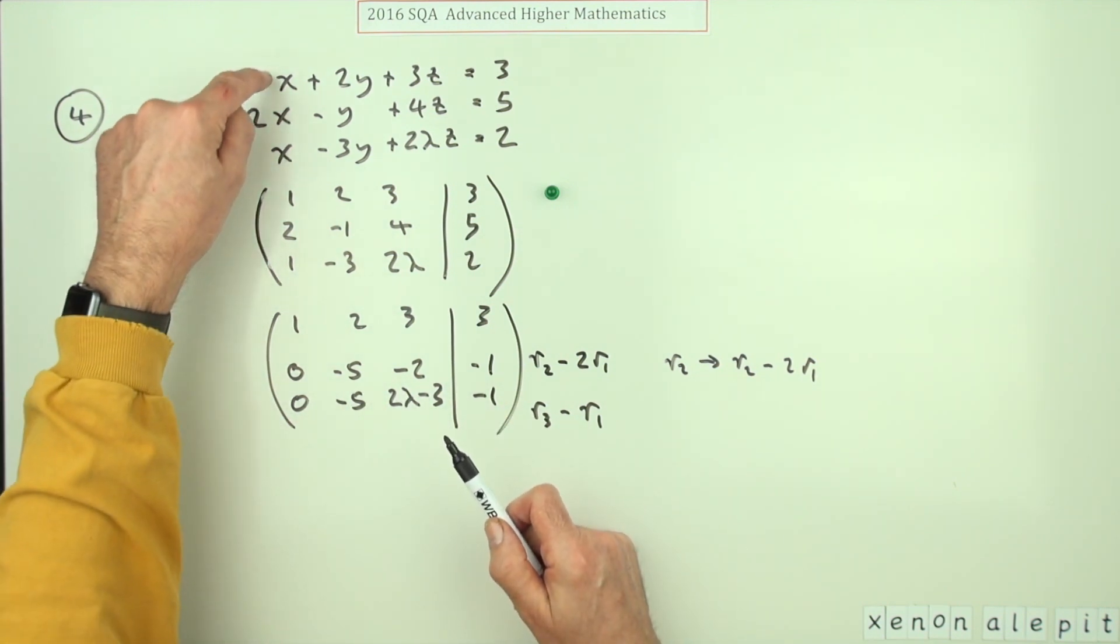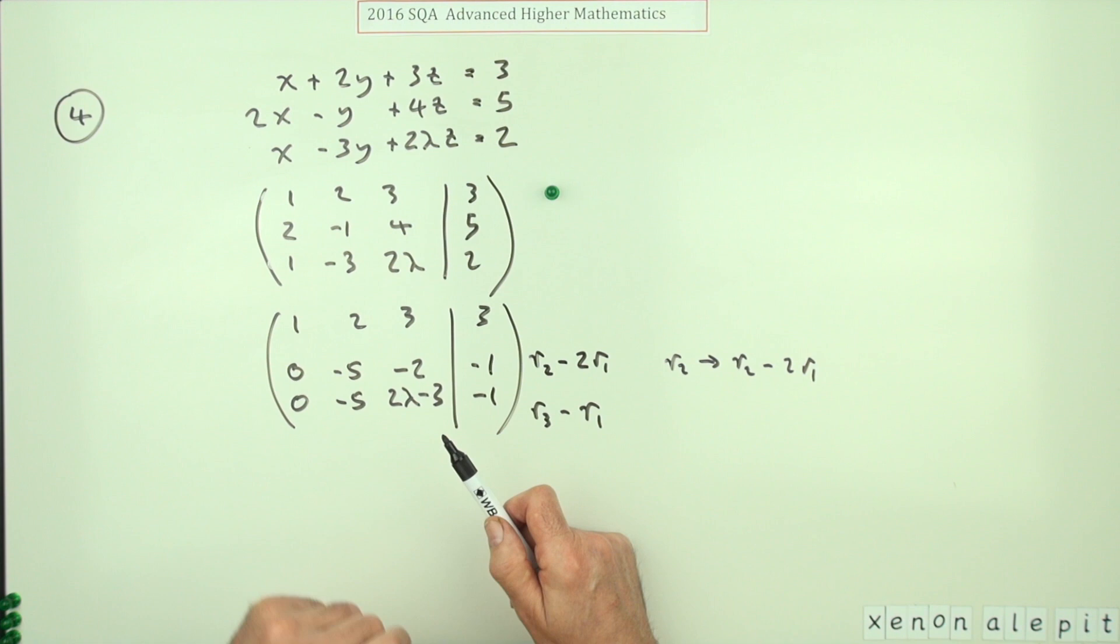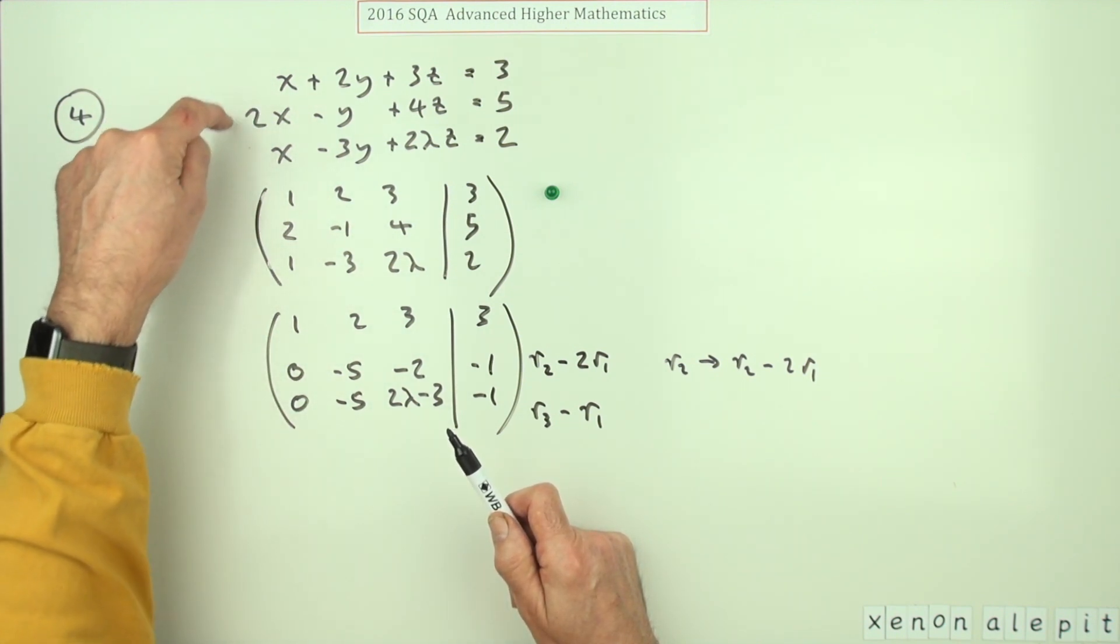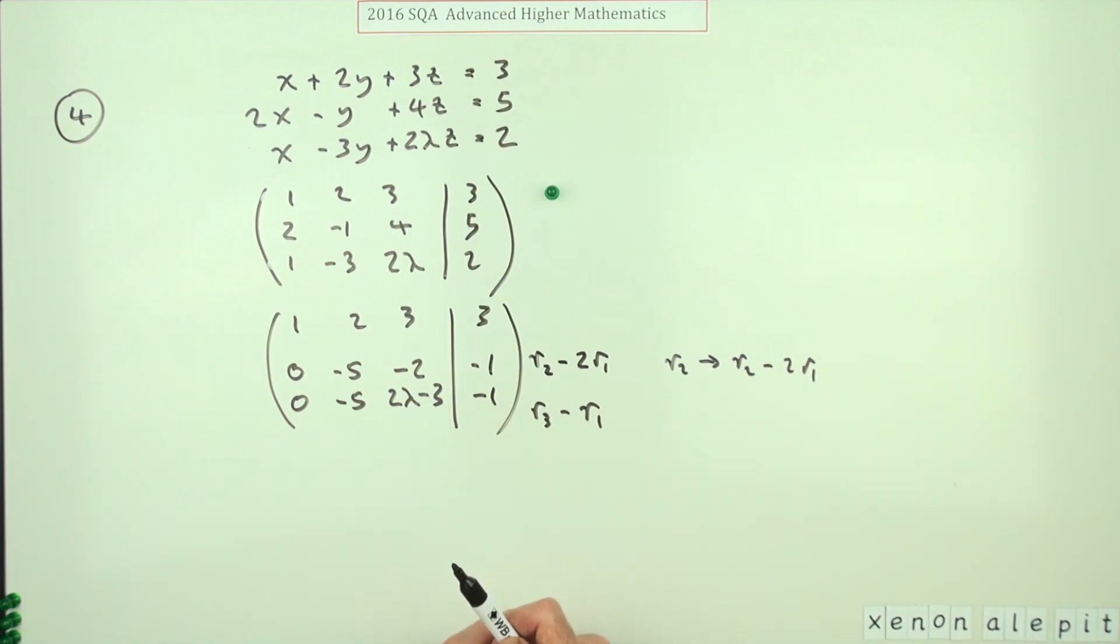Now at this point you spot the redundancy. Redundancy means there's really only two distinct equations here, and that the third one is just a disguise—it's the other two masquerading together to form another equation, which of course isn't another independent equation. So straight away that's going to be redundant if that number is negative two.